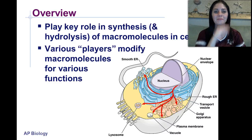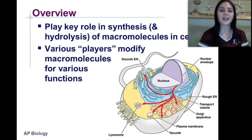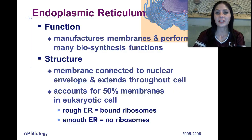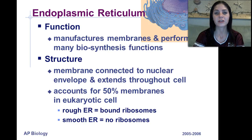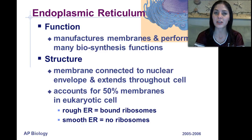Now, there are various players that modify macromolecules for various functions. The endoplasmic reticulum manufactures membranes and performs many biosynthesis functions within the cell. It is a membrane connected to the nuclear envelope and extends throughout the cell, accounting for 50% of membranes in eukaryotic cells. There are two types of endoplasmic reticulum: rough ER, which is studded with ribosomes, and smooth ER, which lacks ribosomes.